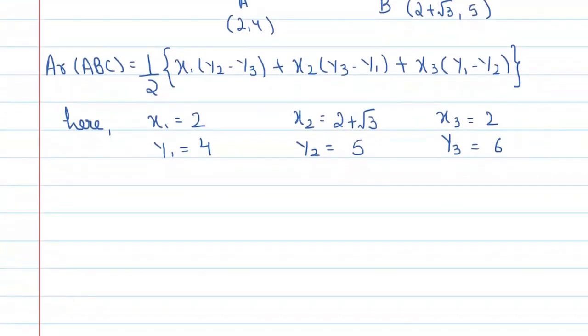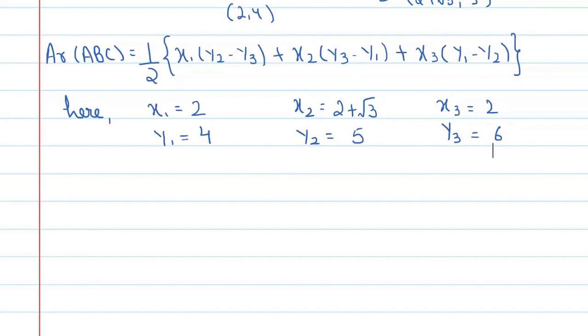So what we have to do now is put these values in our formula and find the area. Area of triangle ABC is equal to half, modulus of [2(5 - 6) plus (2 plus root 3)(6 - 4) plus 2(4 - 5)]. This is in modulus.